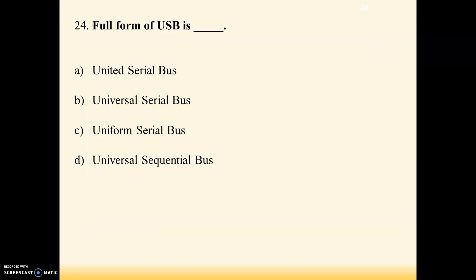Next question: what is the full form of USB? Options are A: united serial bus, B: universal serial bus, C: uniform serial bus, D: universal sequential bus. Answer is B — universal serial bus. We use that term very frequently when using computers or TVs.